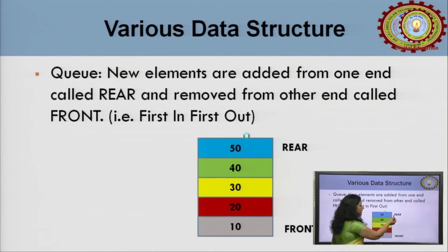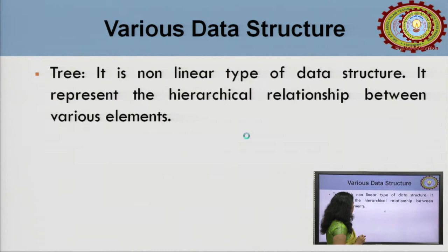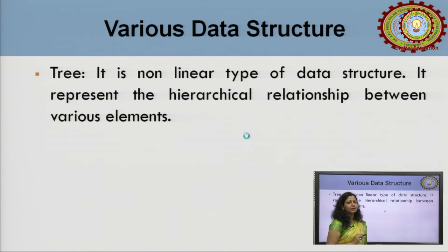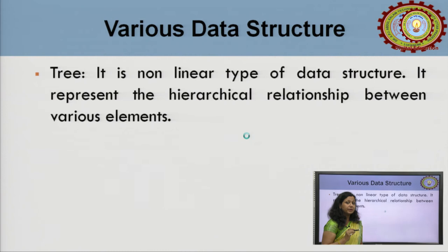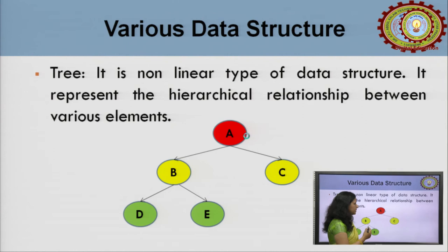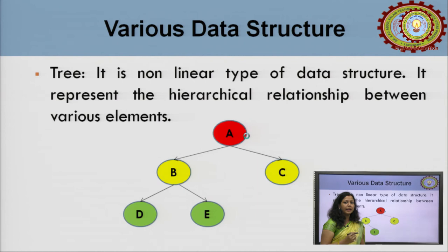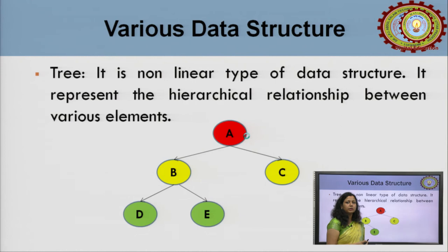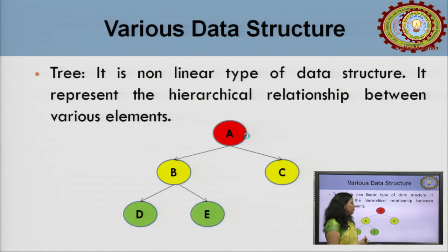Now what is a tree? This is the non-linear data structure. Here data is not represented sequentially — in non-linear structures, data is represented either in hierarchical form or graphical form. When data is represented in hierarchical form, it is called a tree. For example: vehicle is one category, divided into two-wheeler and four-wheeler. Two-wheelers are further divided into scooter and motorbikes; four-wheelers into car and jeep. This hierarchical representation is called a tree.